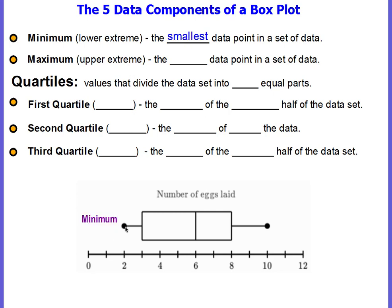So on your box plot, this point right here is the minimum or the lower extreme. The maximum or upper extreme will be the largest data point in a set of data, and here is the maximum point or the upper extreme.